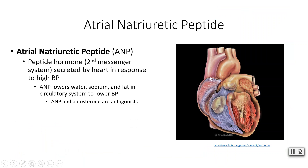Your heart releases the hormone atrial natriuretic peptide, ANP. This is a peptide hormone that uses the second messenger system — cAMP to activate protein kinases. It is secreted by the heart in response to high blood pressure. ANP lowers water reabsorption, lowers sodium reabsorption, and also reduces fat in the circulatory system. By decreasing reabsorption of water and sodium, blood volume drops and therefore blood pressure drops. So aldosterone increases blood pressure, while ANP decreases it — they are antagonists.